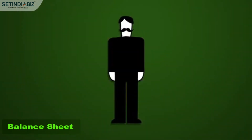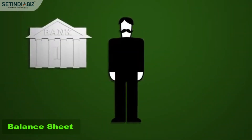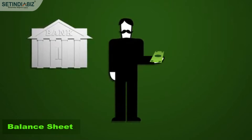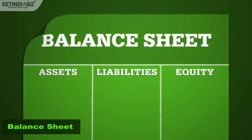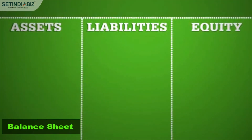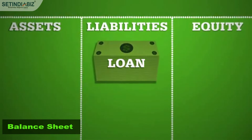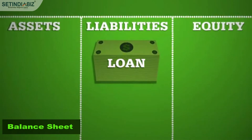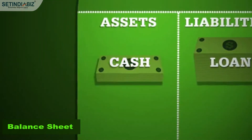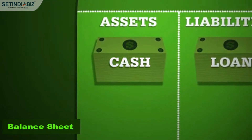Meet Joe. Joe goes to the bank and gets a small business loan. The bank gives him cash. On the balance sheet, his liability increases by the size of the loan and his assets increase by the same amount.